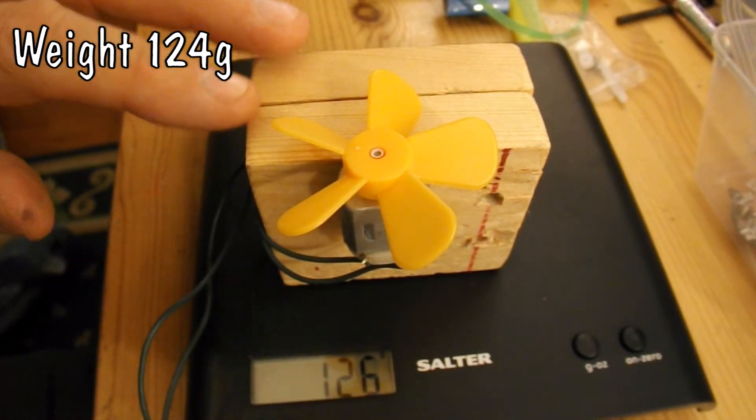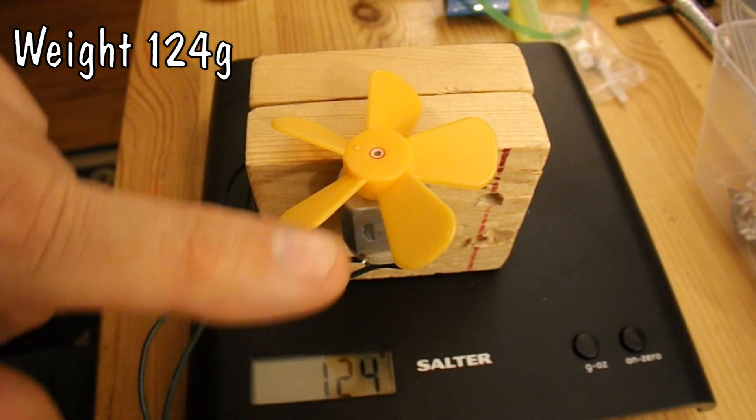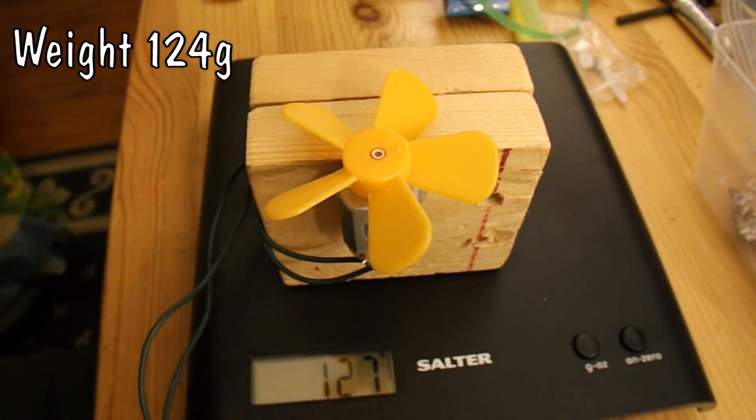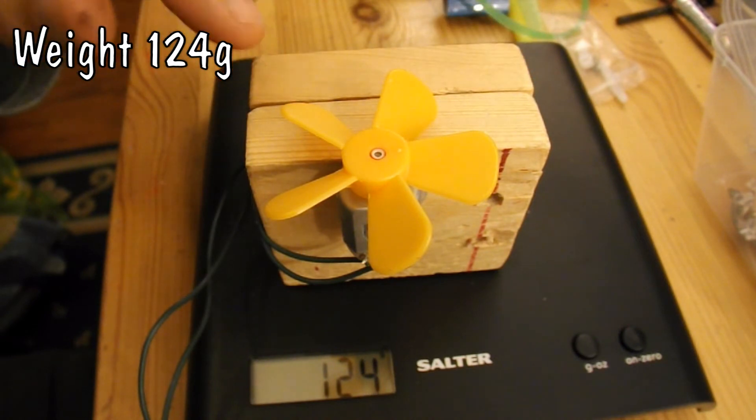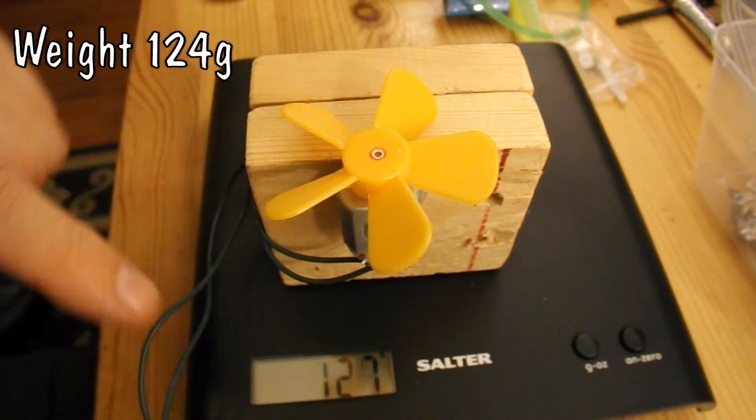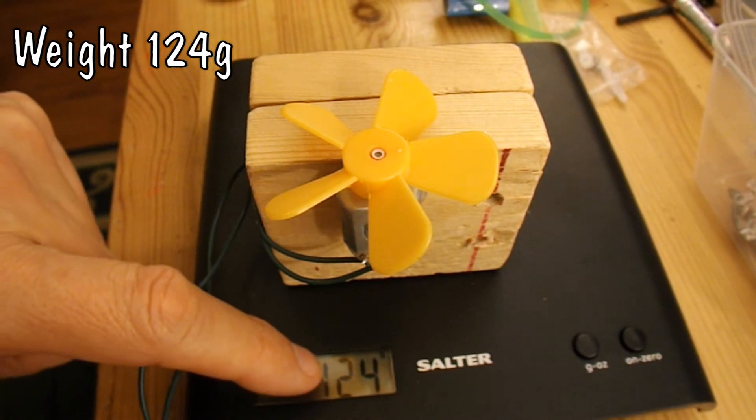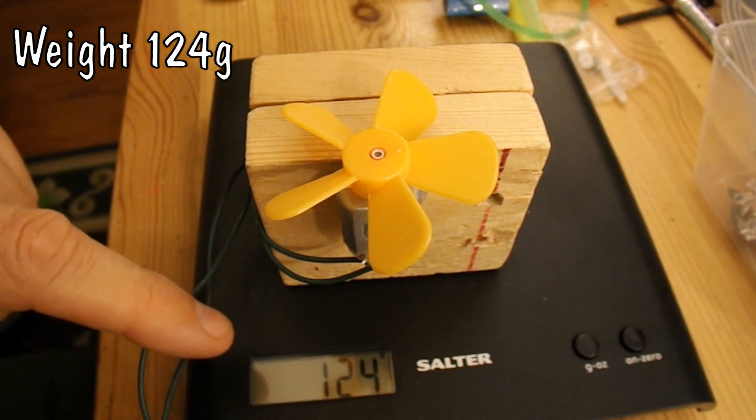We've got the block of wood, got the electric motor, we've got the fan blade. I've got some blue tack on the bottom of the blocks of wood to hold them still on top of the scales and it's currently reading 124 grams.